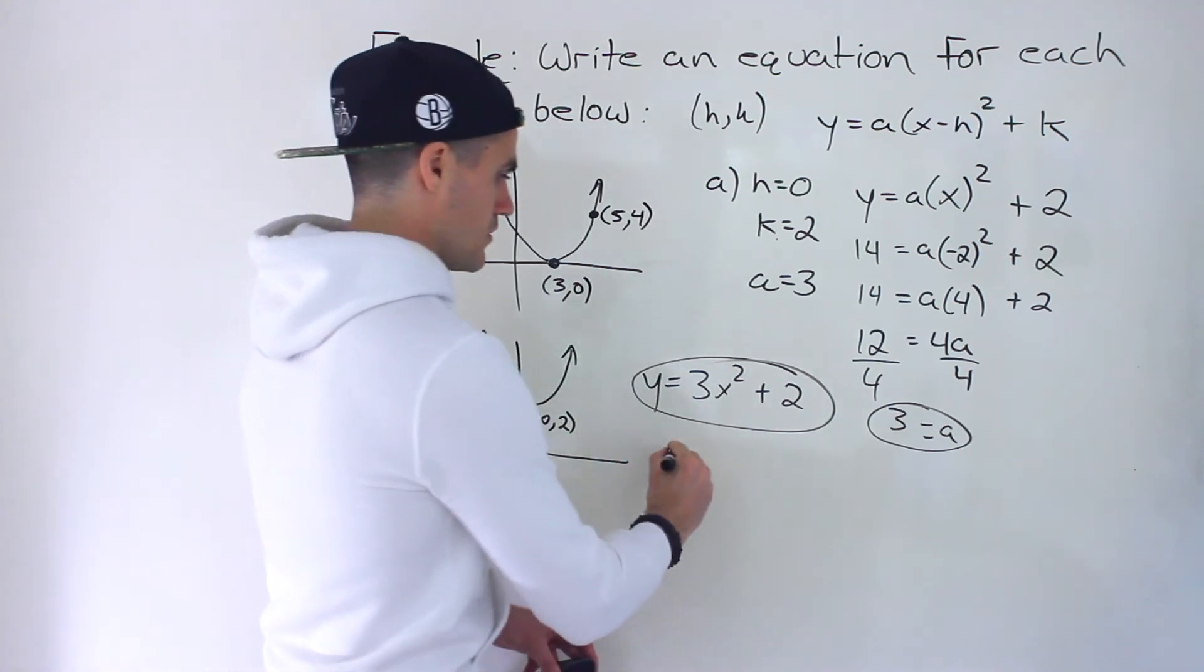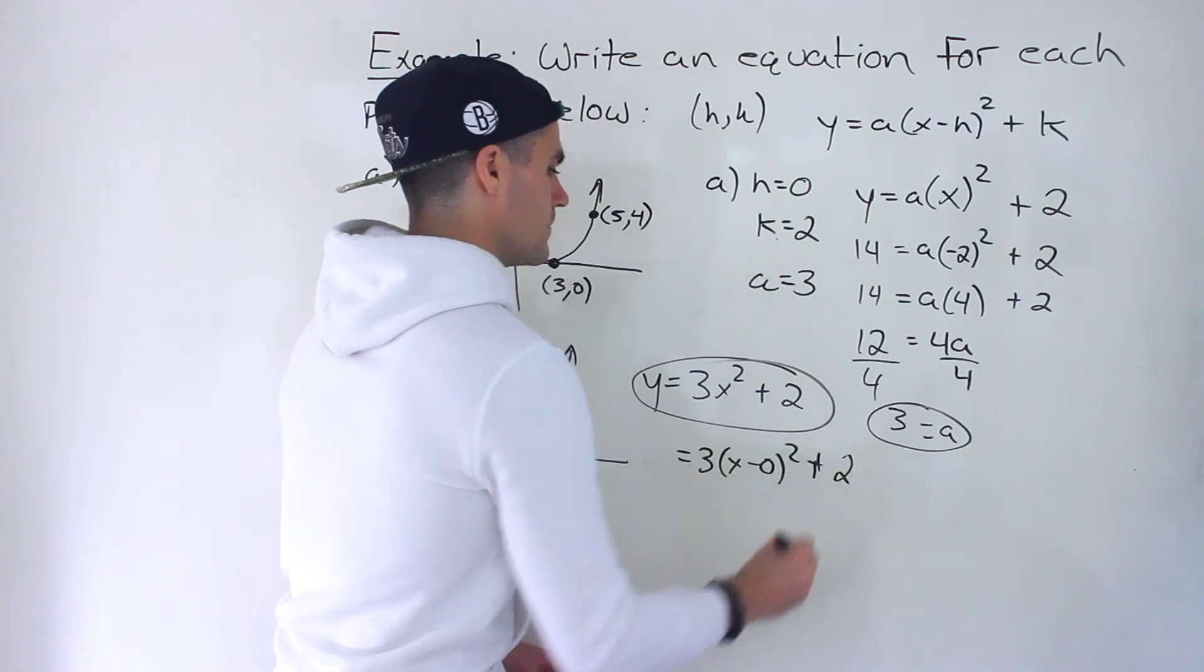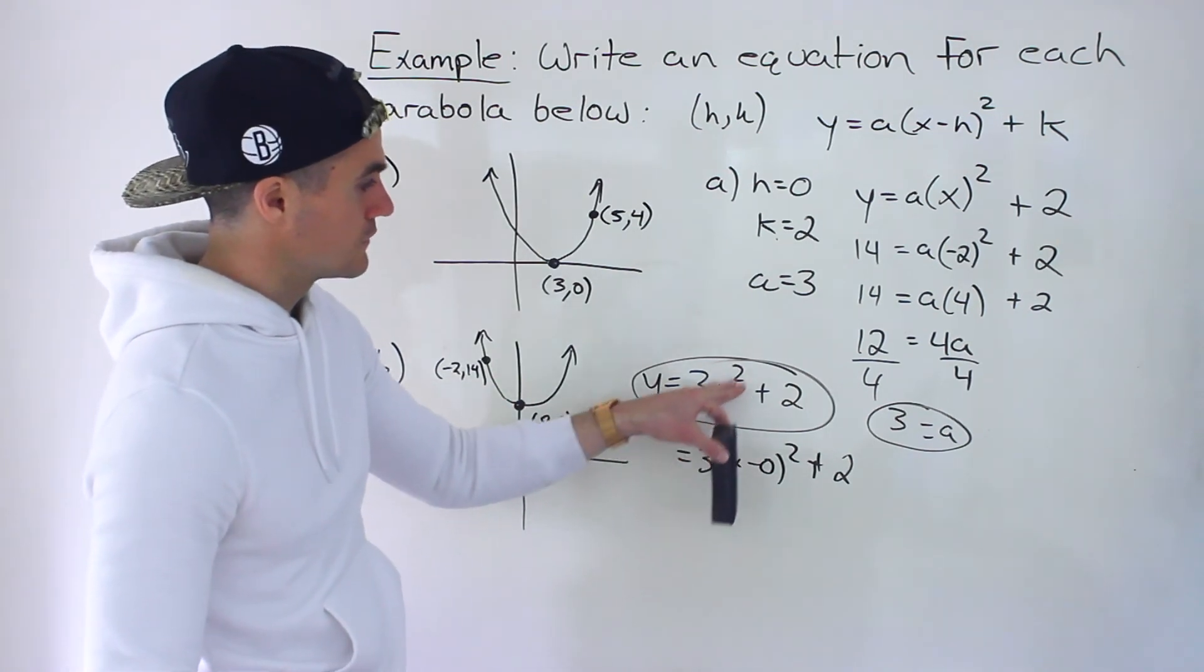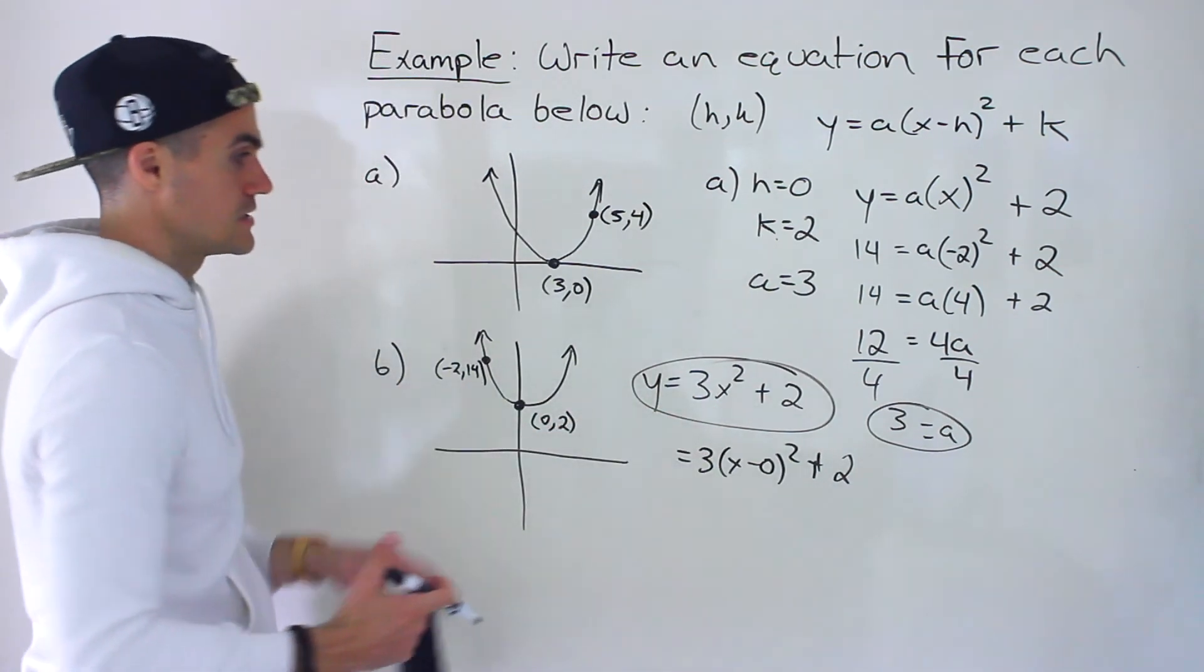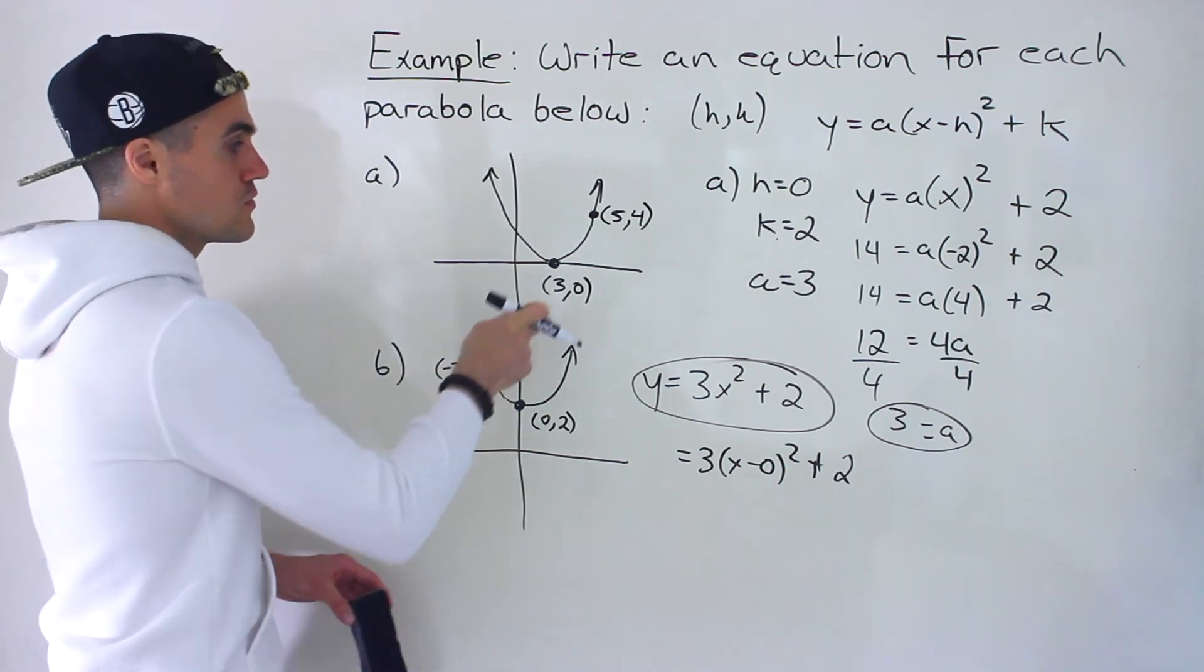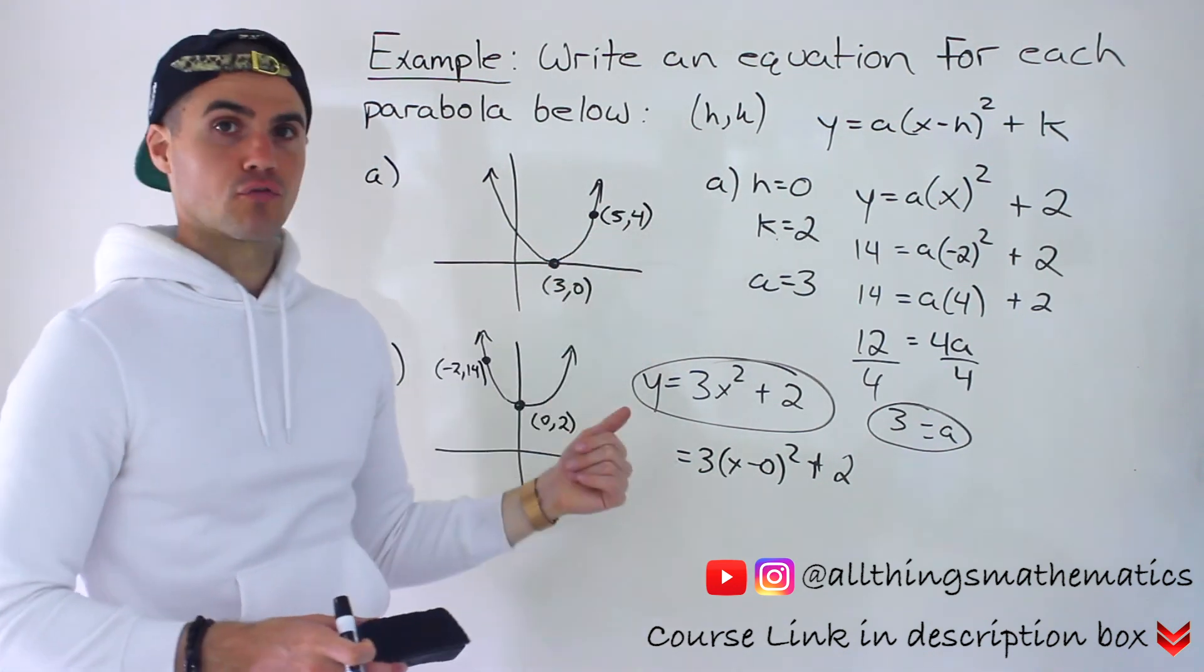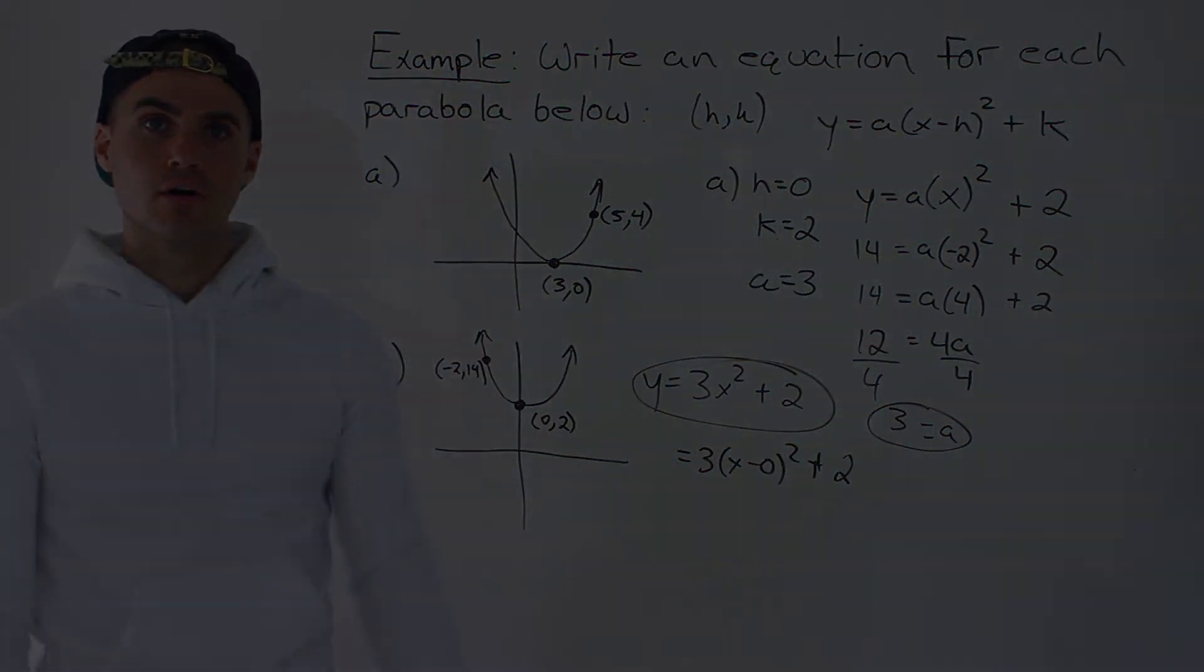So here, another way to write this is like that. So we could tell the vertex is 0 and 2. And then, if you want to test this point, we could plug in negative 2 here for X. Negative 2 to the power of 2 gives us 4 times 3 gives us 12 plus 2. It does indeed give us 14. So if you get graphs like this, just as a review, vertex, if you're given a vertex, it's the H and K value. And then just use the other point to solve for the A value. And in the next few videos, we're going to go over other graphs.